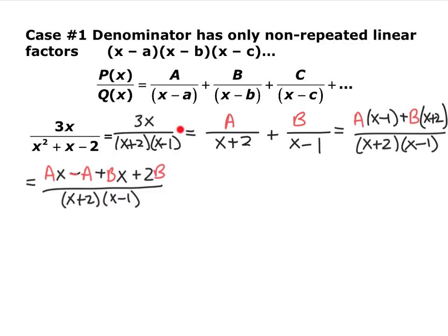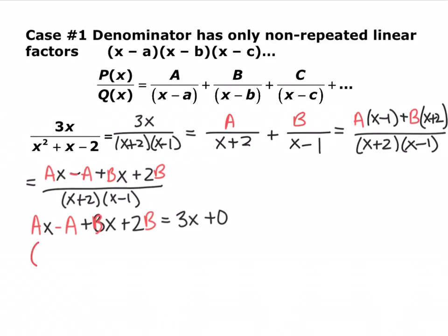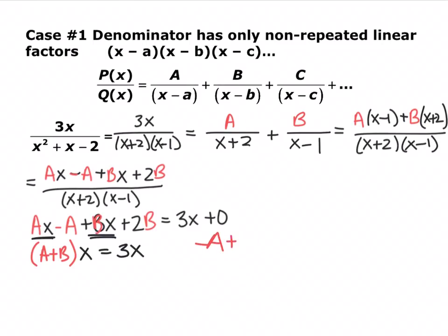We have this fraction where we know the numerator, and one where we're solving for a and b. If these two are equal, and the denominators are equal, then the numerators must be equal. So ax minus a plus bx plus 2b has to equal 3x plus 0. The terms with x must equal the x terms on the right, and the constant terms must equal the constants on the right — which is 0, since there are no constants in the original numerator.